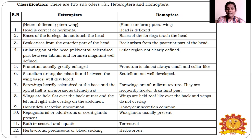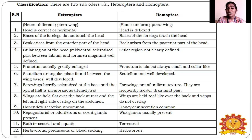In Heteroptera, wings are held flat over the abdomen and the left and right sides overlap on the abdomen. In Homoptera, wings are held roof-like over their back and do not overlap. Honeydew secretion is common in Homoptera — in aphids and mealy bugs it is very common — but honeydew secretion is not seen in bugs. Bugs have odoriferous scent glands, while Homoptera have wax glands. Heteroptera are both terrestrial and aquatic; Homoptera are only terrestrial.